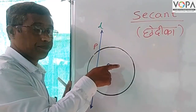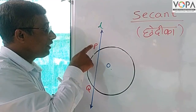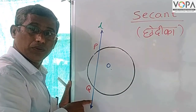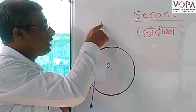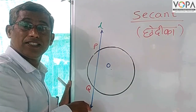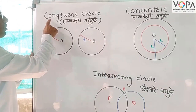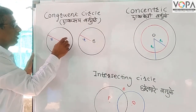A secant — in Marathi called 'chedika' — is a line which intersects the circle in two distinct points. For example, with O as the center of the circle, line L intersects at points P and Q. So we say that line L is a secant of this circle.